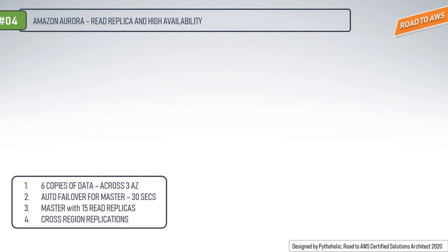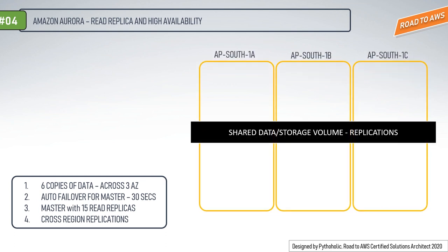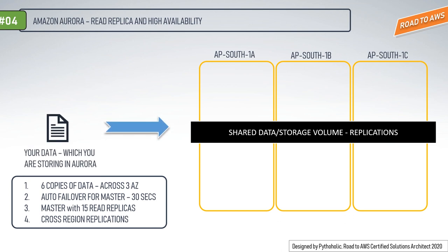Let's bring up our three AZs: APSouth1A, APSouth1B, and APSouth1C. We have the data we wish to store on the Aurora database — either MySQL or PostgreSQL. Aurora provisions a service to house your database engine. With data replication enabled — what we call shared storage volume replication — Amazon Aurora stores six copies of your data across three availability zones, and the storage is striped across multiple volumes.